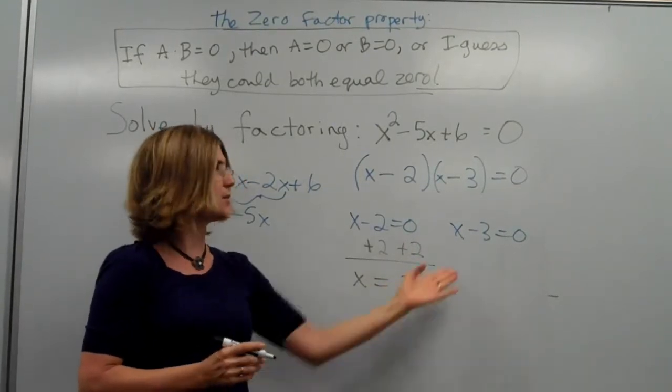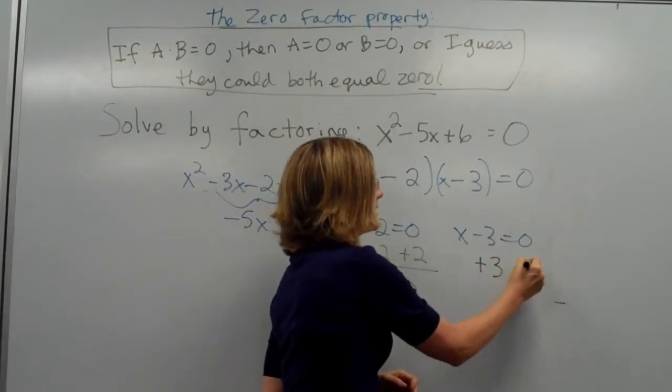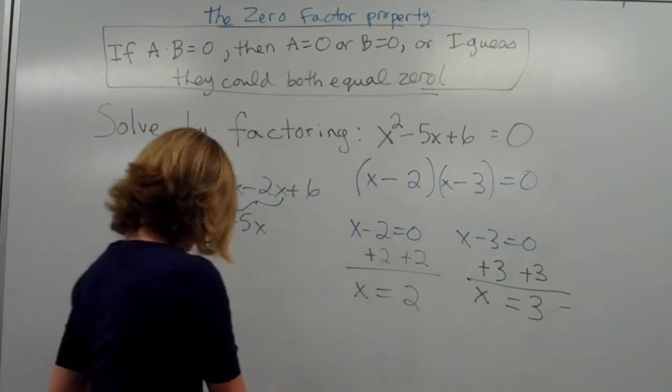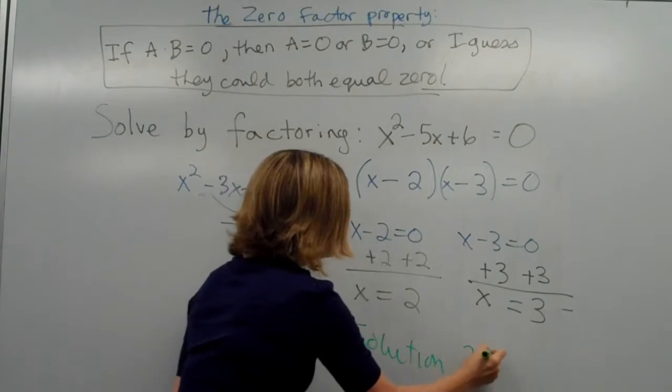So, let's look for the other one. x minus three is zero. Since we're subtracting three from x, we want to undo subtracting three, so we want to add three. Of course, in math, we do that on both sides. So, our solution would be two, three.